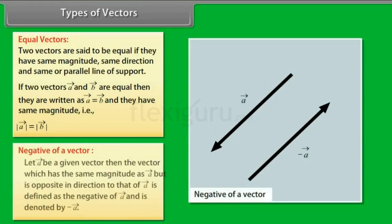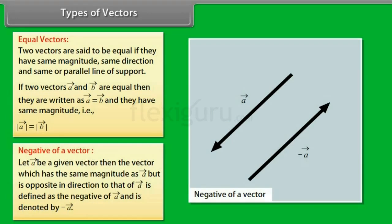Negative of a Vector: Let vector A be a given vector, then the vector which has the same magnitude as vector A but is opposite in direction to that of vector A is defined as the negative of vector A and is denoted by minus vector A.